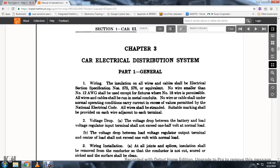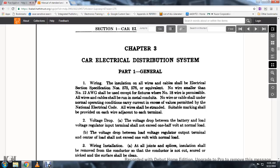Wiring: The installation on all wire cables should be electrically sectioned per specification numbers 575, 576, or equivalent. No wire smaller than number 12 AWG shall be used except for fixtures where number 18 wire is permissible. All wires capable shall run with metal conduits. No wire cable shall under normal operation carry current in excess of the value permitted with the National Electrical Code. All wires shall be stranded with suitable marking provided on each wire adjacent to each terminal.